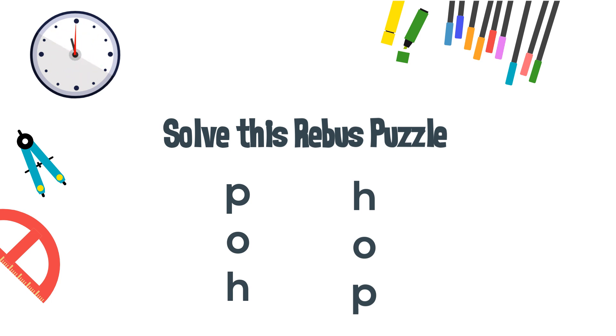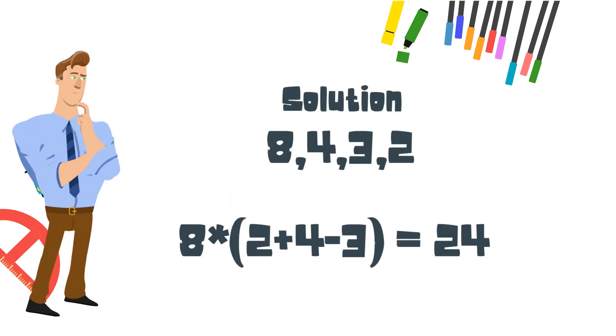Okay, you may need to pause it for just a moment. Here's our solution to the math problem: 8 times, in parentheses, 2 plus 4 minus 3, equals 24.